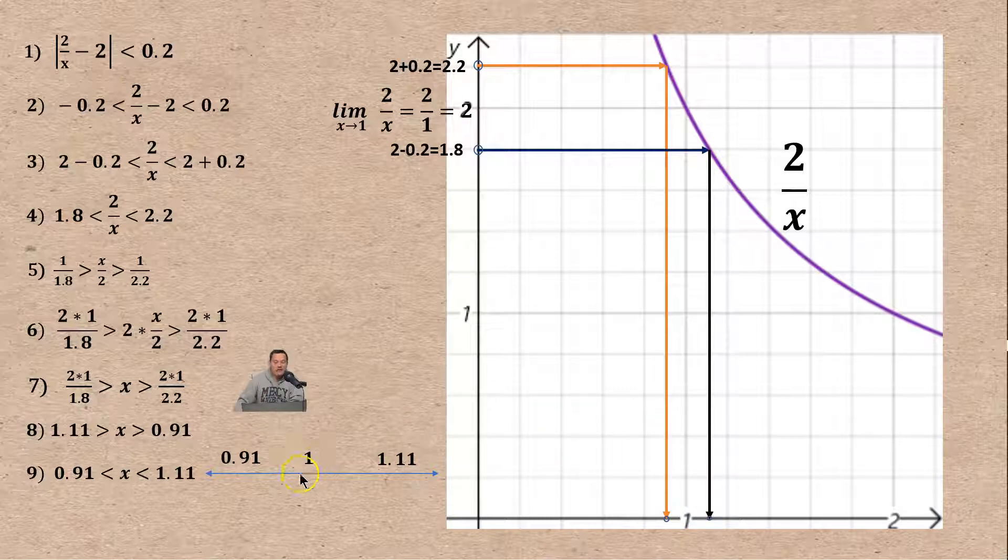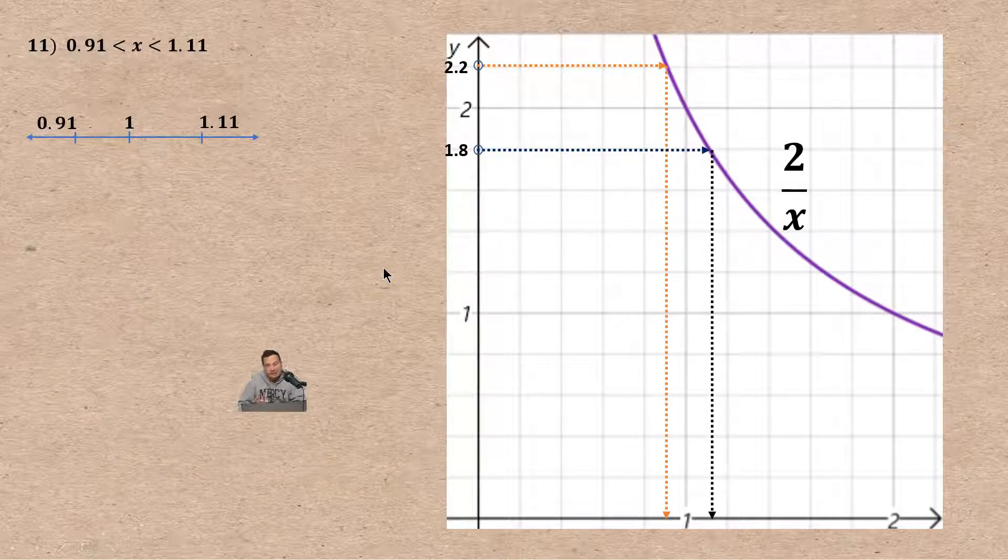I hope you observed something about this interval of values. These are the allowed values of x that you can stick in. If you took a value like 1.01 and stuck it into the function, the output would be guaranteed to be between 2.2 and 1.8 on the vertical. That's what we have found. But is that everything? Not really. There's a detail that we have to discuss still.